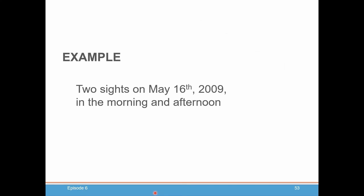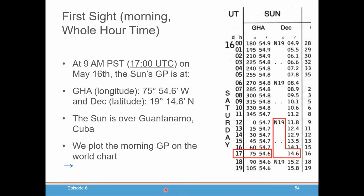So let's do an example where we're going to use this information to do some circles of position and see if we can figure out where we are when we took our sights. So we're going to do two sights on May 16th, 2009. We're going to be stationary. We're not going to be moving around. And we'll take one sight in the morning and we'll take another sight in the afternoon and see using that information along with our sextant reading, if we can determine where we are.